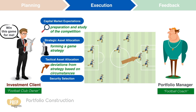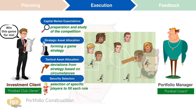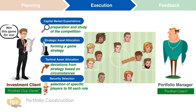Tactical asset allocation are deviations from the strategy based on circumstances as the game proceeds. For example, if the team is behind, the coach may move one midfielder up to be a forward as a tactical move. And security selection is the selection of specific players to fill in each role. With that, let's discuss each of these steps in detail.